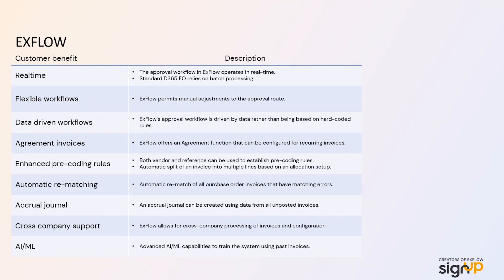Another key function of Xflow versus the standard Microsoft offering is the ability to handle repeat invoices — often overhead invoices. We refer to these as agreement invoices: a utility bill or a mobile phone bill received regularly, say £40 a month. If it's within that tolerance, why should it go through a lengthy approval process? However, if that agreement ever exceeds — say £50 or £60 — then an approval process can be triggered. That's just one basic example, because what you want in automation is just that: automation. You don't want to intervene every single time. It's all about exception handling, and Xflow is fantastic at that.